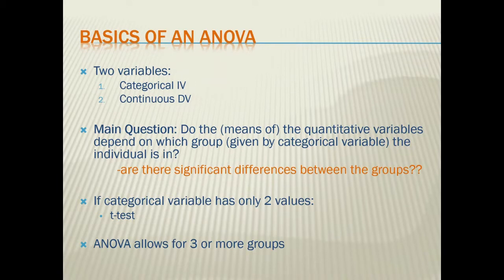And some of the basics of an ANOVA. An ANOVA is going to have two variables. Our independent variable is going to be categorical and our dependent variable will be continuous. The main question that we're trying to get an answer for is whether or not the continuous dependent variable or the quantitative variable is going to have differences in their means depending upon which group the subject or participant is in.